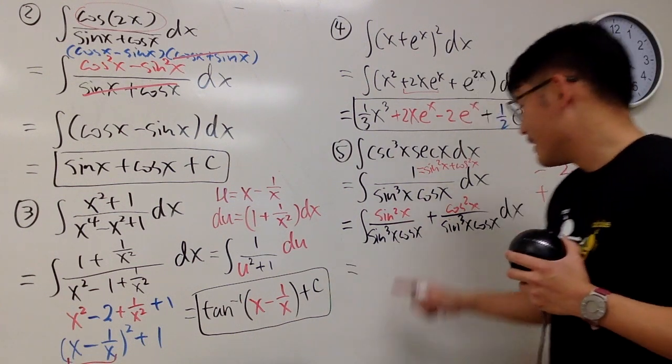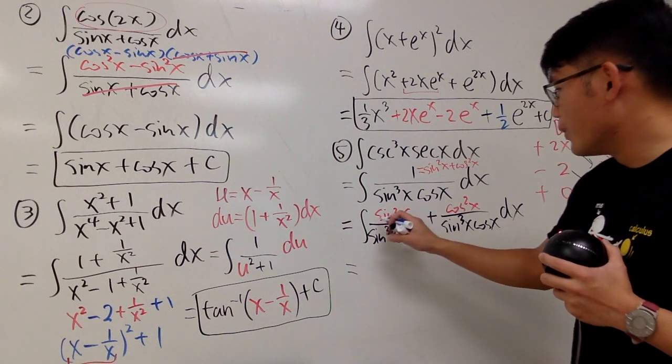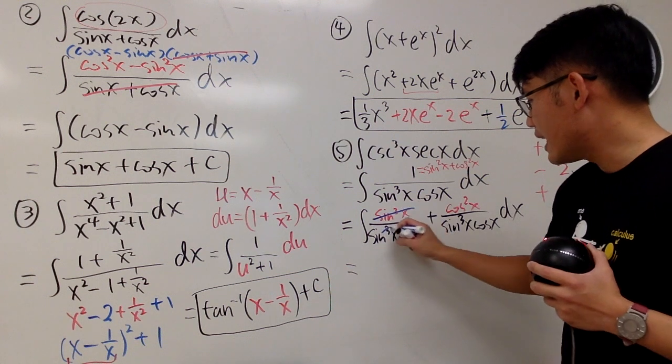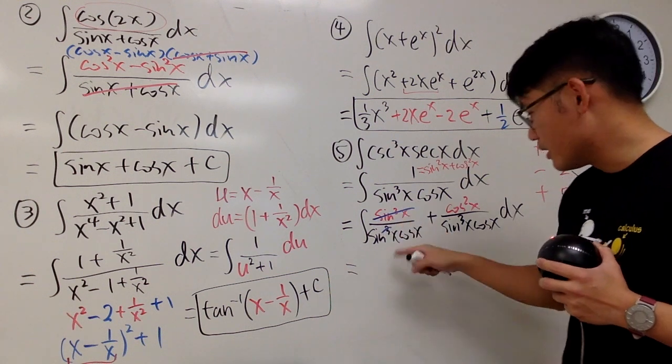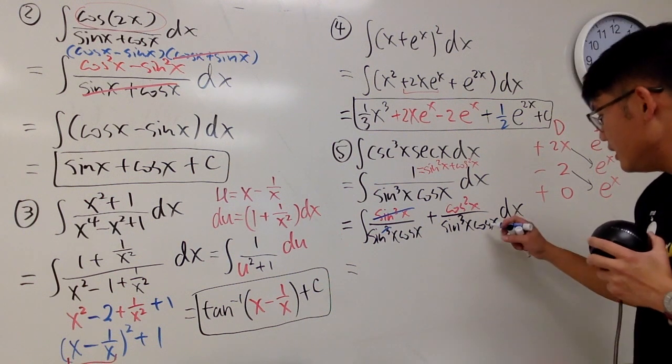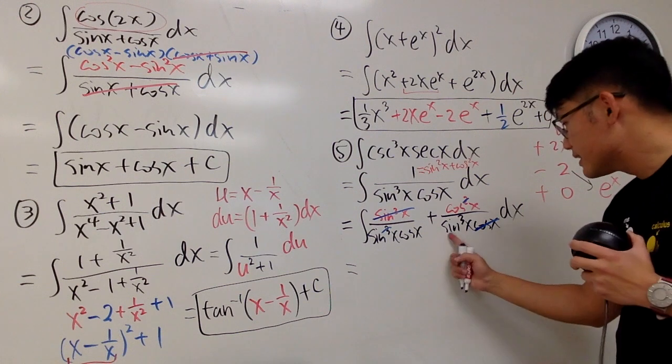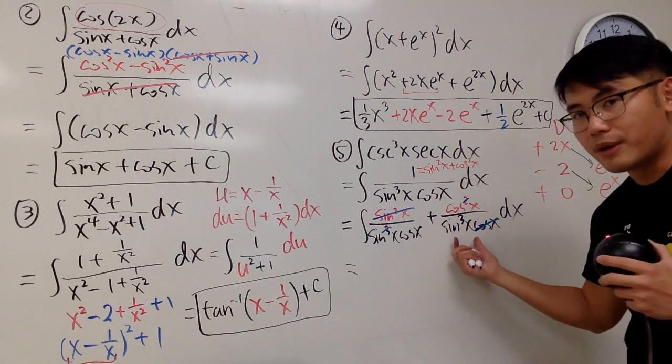Okay, this right here is pretty nice, because as you can see, we can actually just cancel this and that, so you have 1 power right here. So that's okay. This right here is actually easier, because when you cancel the cosine cosine, you have sine x in the denominator and the 2-3 power right here.